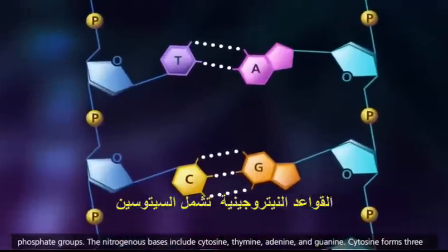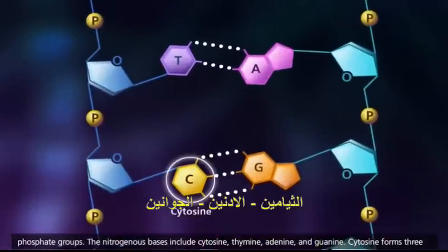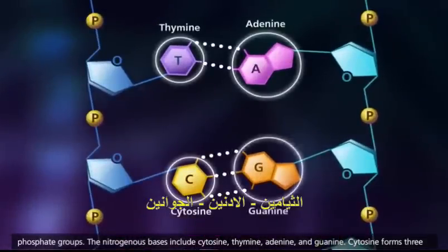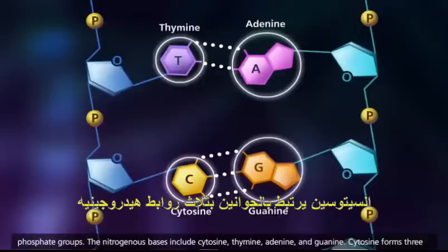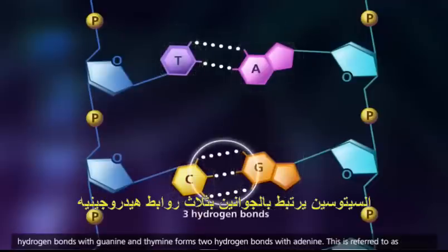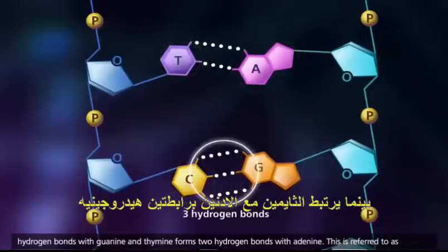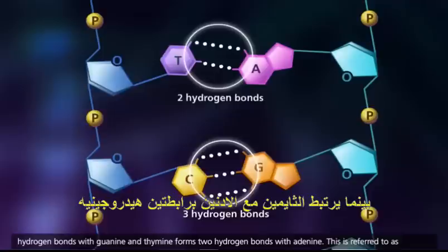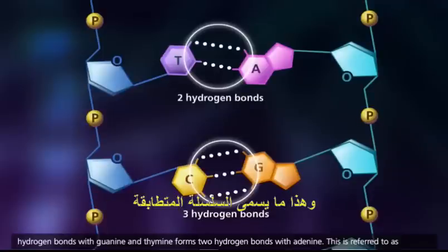The nitrogenous bases include cytosine, thymine, adenine, and guanine. Cytosine forms three hydrogen bonds with guanine, and thymine forms two hydrogen bonds with adenine. This is referred to as complementary base pairing.